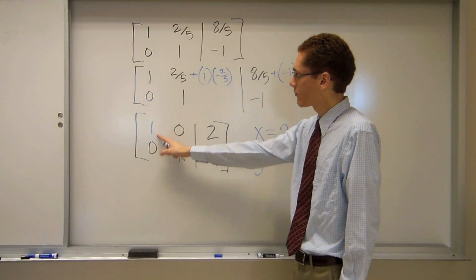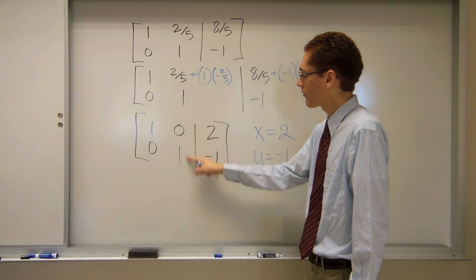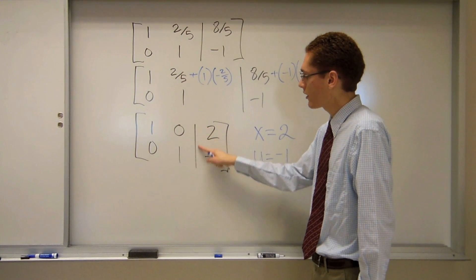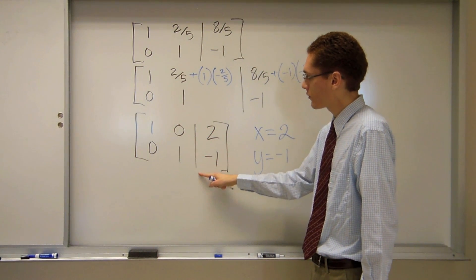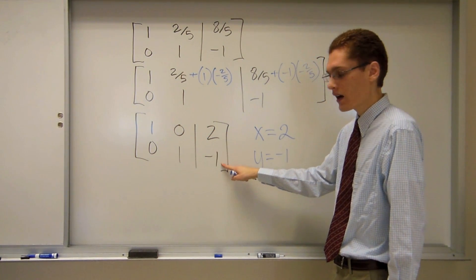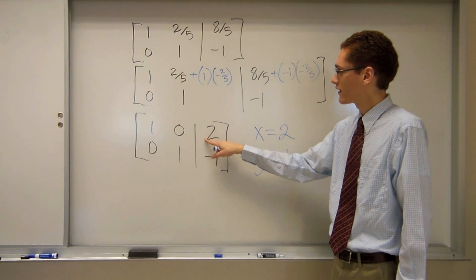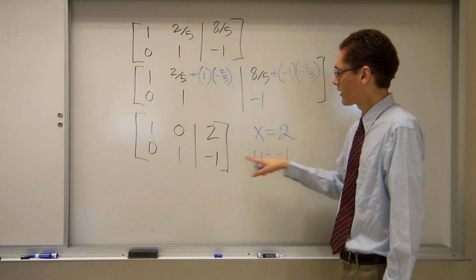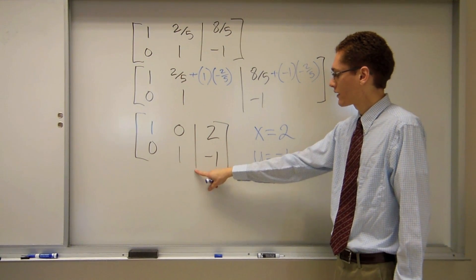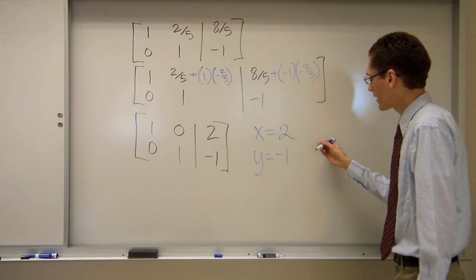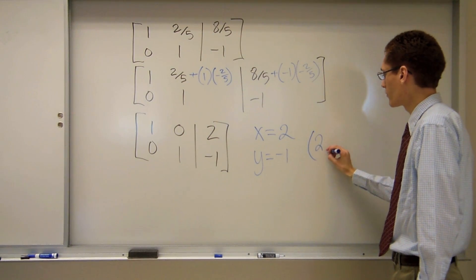So what this tells us is that x equals 2 and y equals negative 1. Because this column, remember, was the x column. This column was the y column. The augment line is the equals sign, and then these are the constants. So I have x plus 0 equals 2 and y equals negative 1. So that leaves me with the point 2, negative 1.